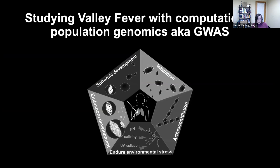We use an approach called GWAS. Essentially the idea is that we can get genome sequences from many individuals in the population and understand how the genetic diversity of these organisms is contributing to some of its potential virulence traits.